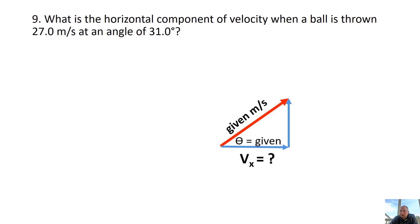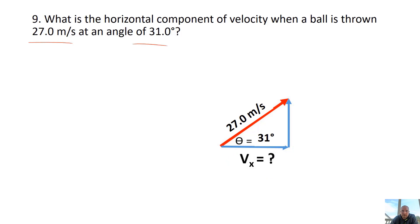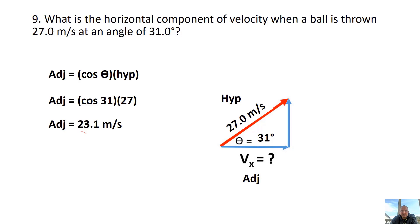Problem 9: Now we're looking for the x component — the adjacent side — which uses cosine. Your numbers will be different between problems, so draw a new triangle each time. It's the adjacent side, so it goes with cosine. Plugging in values, I get 23.1 as my number, and the unit is meters per second. On E-class, enter the number and unit in the blanks.